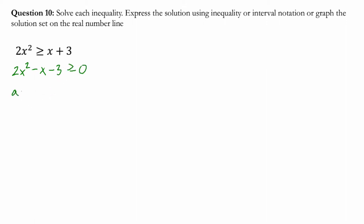And then I'm going to use the quadratic formula. a is equal to 2, b is equal to negative 1, and c is equal to negative 3. And I can say that x is going to be negative negative 1, so 1, plus or minus the square root of b squared, which is 1 minus 4 times negative 6, right, 2 times negative 3, all over 2 times a, or 4.